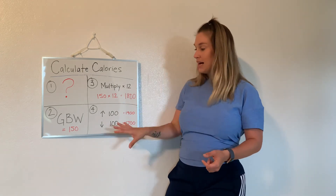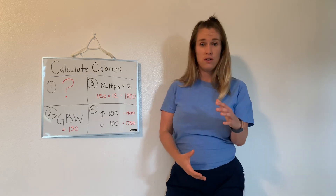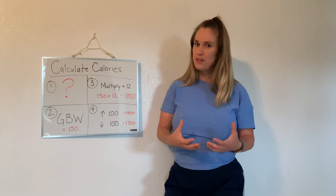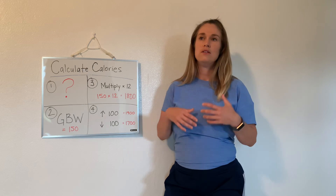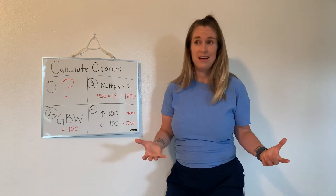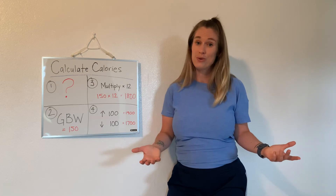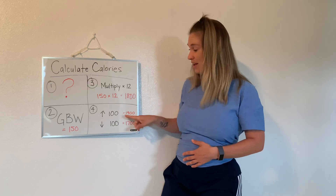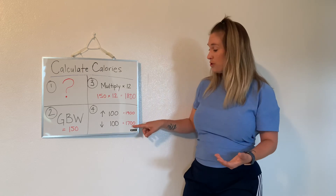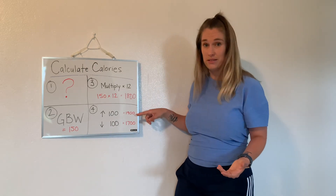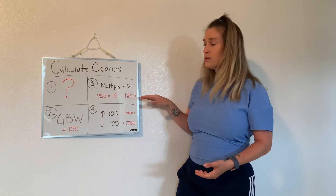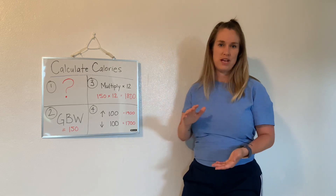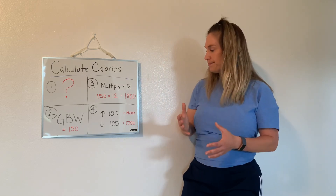Multiplying 150 by 12 gives us 1800. The last step is to create a calorie range. Rather than trying to hit 1800 exactly every single day, we add 100 and subtract 100 to give you a range of 1700 to 1900 calories daily. The more flexible you are, the better you'll adhere to your diet, and the better your adherence the better your chances of hitting your goal. It's okay if you hit 1800 or 1900 — just stay within that range.